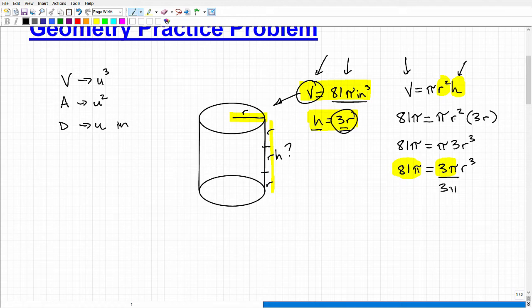But it doesn't make a difference because now I could just divide both sides of this equation by 3 pi. What I want to do is isolate the R cubed. So when I do that, my pi's here are going to cross cancel. And 81 divided by 3 will be 27. So I have 27 equals R cubed.